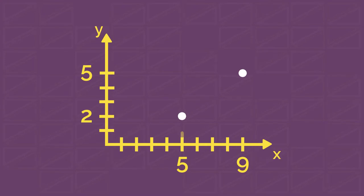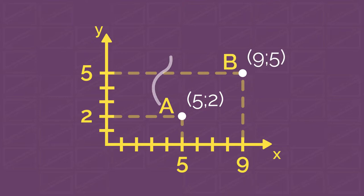Assuming that we have two points A with coordinates 5, 2 and B with coordinates 9, 5, what's the distance between them? Or in other words, what is the length of the line segment AB? The problem is that we don't know how to count distance diagonally yet, only using axes.